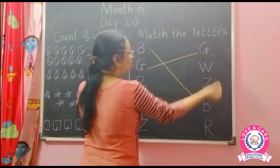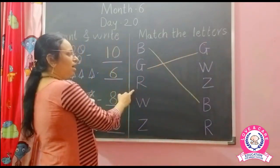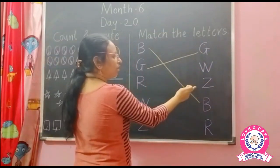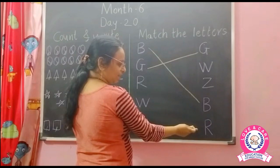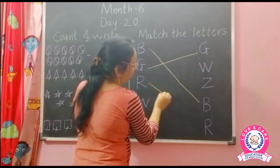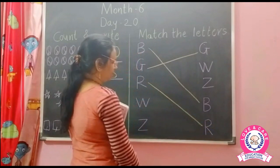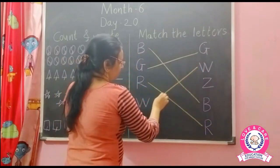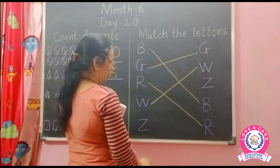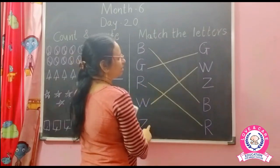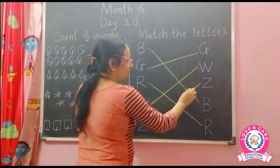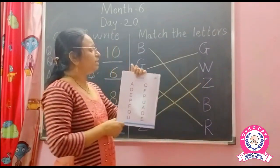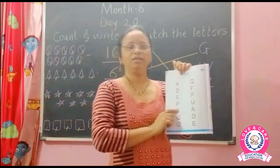Match G to G. Next letter R — where is letter R? This is letter R? No. R? No. This is letter R? Yes — letter R. Match the same letter R. Next, W — this is letter W, so match the letter W. And next letter Z — where is letter Z? Yes — letter Z. So match the letter Z. Please complete the match the letter to letter concept.